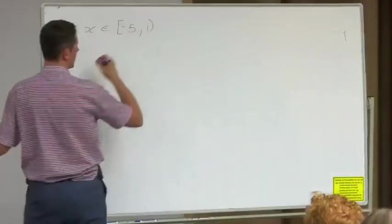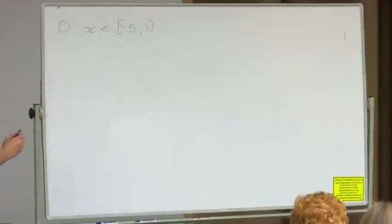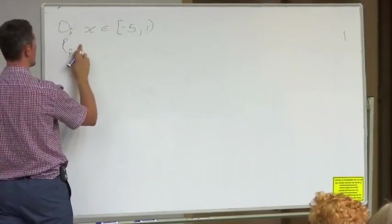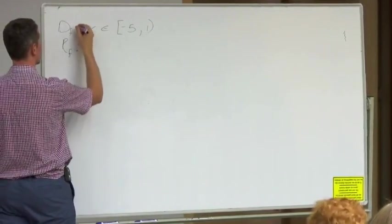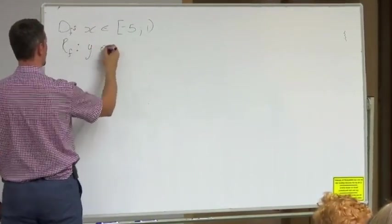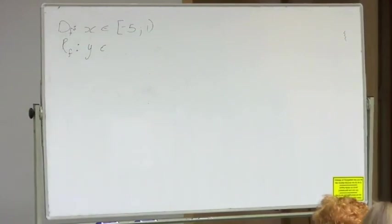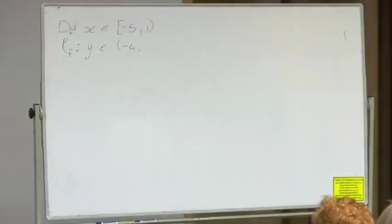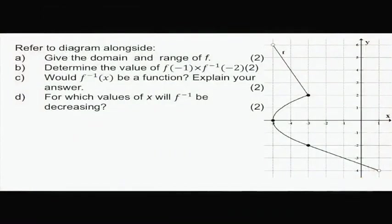But it doesn't include that one. If I look at the range of f, the range of f is y is an element of—the lowest y value is at negative 4, right at the bottom, and it doesn't touch it because it's not included. The highest y value is at 6, and again it doesn't touch 6.